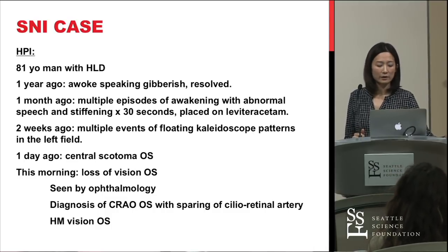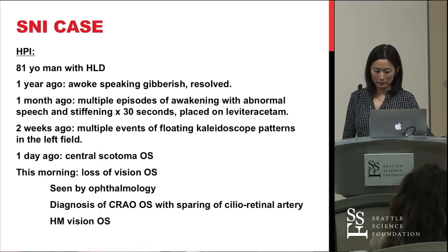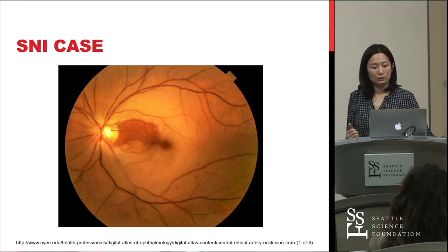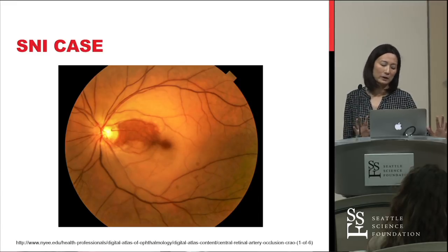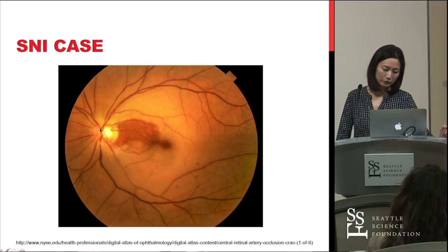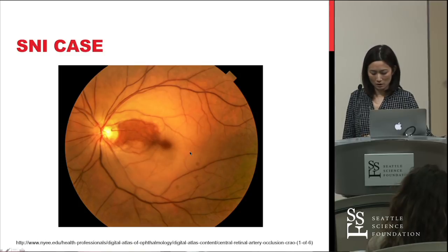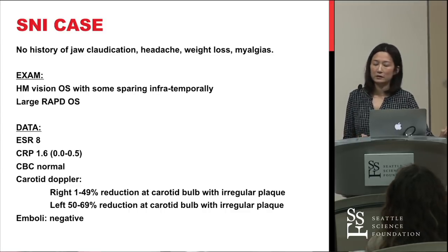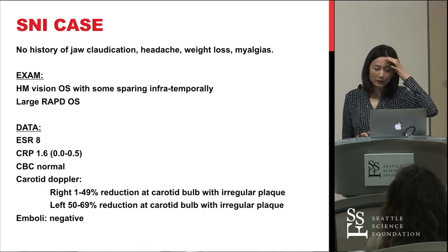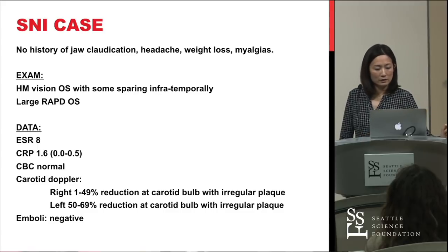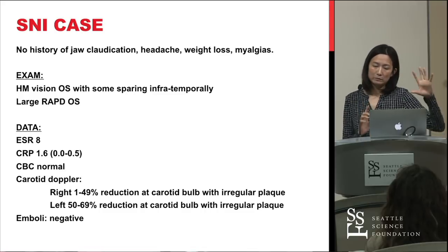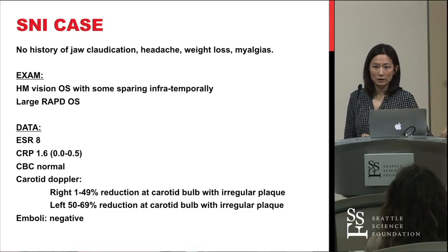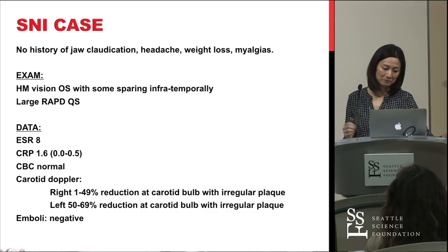He appropriately sees ophthalmology, who diagnosed him with a central retinal artery occlusion of the left eye with sparing of the distribution of the cilio-retinal artery. His vision was hand motion in the left eye. A representative fundus photo would show pallor of the retina with areas of sparing between the nerve and the macula. He reports no jaw claudication, headache, weight loss, or myalgias, and has a large relative afferent pupillary defect on the left eye.